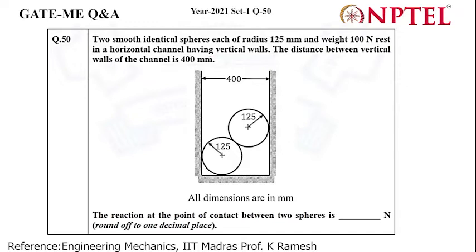a horizontal channel having vertical walls. The distance between vertical walls of the channel is 400 mm. We need to find the reaction at the point of contact between two spheres. So in this question, they're asking you to get the reaction at point of contact.